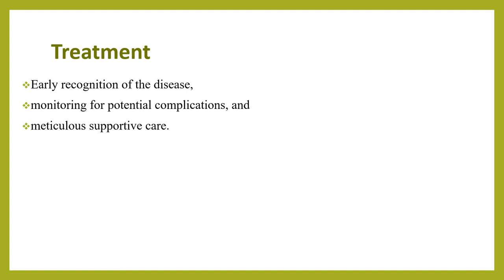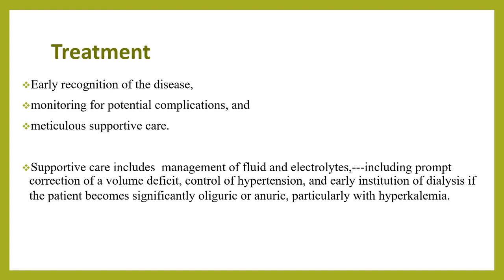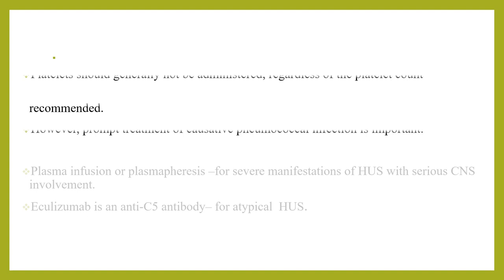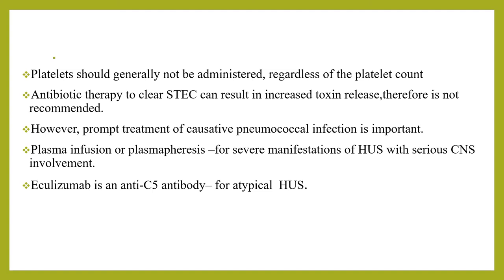When we see the treatment, early recognition, intensive supportive care, and monitoring for potential complications is very important. Supportive care includes management of fluid and electrolytes, including prompt correction of volume deficits, control of hypertension, and early institution of dialysis if the patient becomes significantly oliguric or anuric, particularly with hyperkalemia. Early intravenous volume expansion before the onset of oliguria or anuria might be nephroprotective in diarrhea-associated HUS. Red cell transfusions are usually required because hemolysis can be brisk and recurrent until the active phase of the disease has resolved. In pneumococcal-associated HUS, it is critical that any administered red blood cells should be washed before transfusing to remove residual plasma, because of endogenous IgM directed against the revealed T antigen that can accelerate the pathogenesis of the disease.